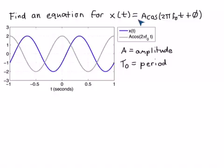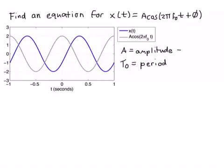We know that the generic equation for a sine wave can be written as A cosine(2πf₀t + φ). A is the amplitude of the signal. We know that a sinusoidal signal will go between a maximum of its positive amplitude, A, and a minimum of its negative amplitude, minus A. Reading off the plot, we can tell that this particular blue sine wave goes between minus 2 and plus 2. Thus, the amplitude of this signal is 2, so we know A is 2.